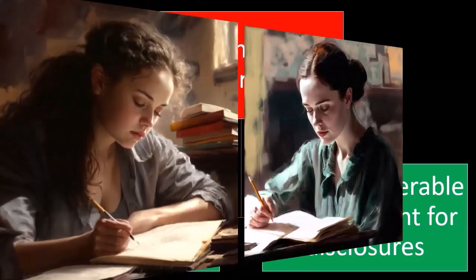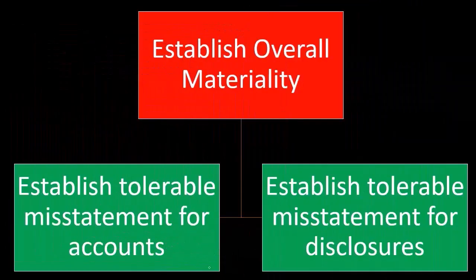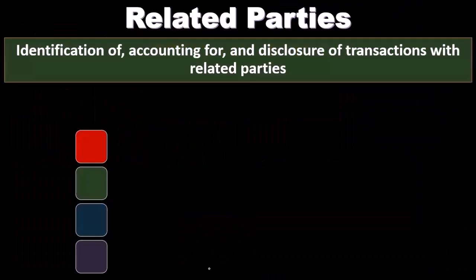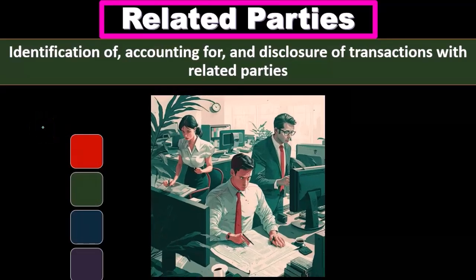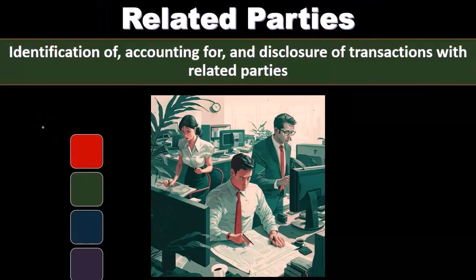A misstatement that we could work with as we go into those accounts — the same thing is true for establishing tolerable misstatements for the disclosures to the financial statements, including related parties: identification, accounting for, and disclosure of transactions with related parties.